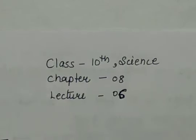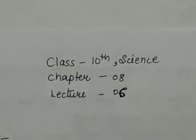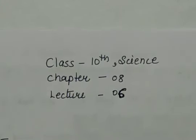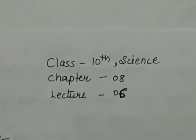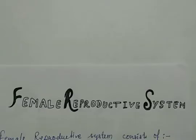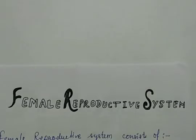Good morning, dear children. This video is for Class 10, subject Science, Chapter 8, Lecture 6. Our today's topic is the female reproductive system. In our previous lecture we understood the male reproductive system — its proper functioning, structure, and the functions of each part.